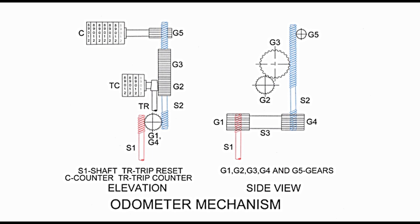There is a link TR available to the driver on the dashboard as a push button. By pushing it, the trip meter can be set to zero. Gears G2 and G3 are engaged, and motion from shaft S2 is also transferred to trip counter TC through gears G3 and G2. This activates the trip counter TC, and movement of digits displays the distance traveled during a trip.